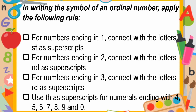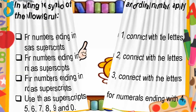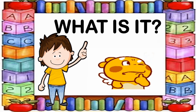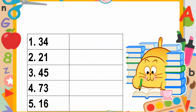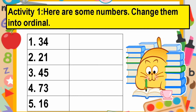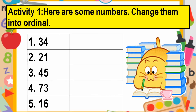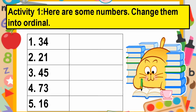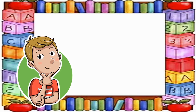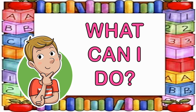Following these rules, we will be able to write ordinal numbers in symbols properly. Now let us move on to the next part of our lesson: What Is It? Activity one — here are some numbers; all we need to do is change them into ordinal numbers. Number one: thirty-four, twenty-one, forty-five, seventy-three, and sixteen.